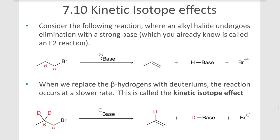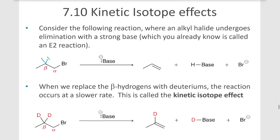Let's consider this reaction where the alkyl halide undergoes an elimination with a strong base. This is called an E2 reaction. The base pulls off a hydrogen, forms a double bond, kicks out the leaving group, and we get this alkene.